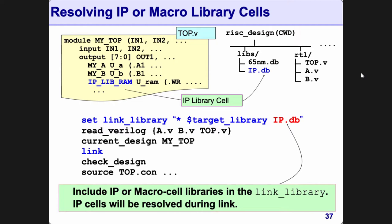If the IP is in RTL format, there's no difference between that IP and your Verilog code — someone else wrote that code and gave it to you. For most CPU cores and analog blocks, they come in what is called hard macro format. Hard macro means it's already been designed, the layout has been done, and what you get is just a gate-level model. There is no need to optimize further.